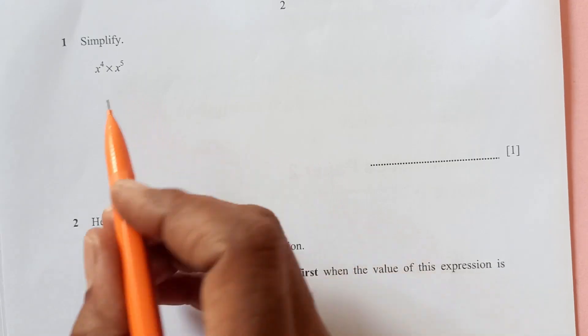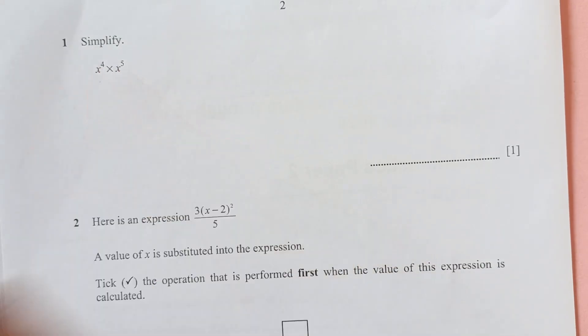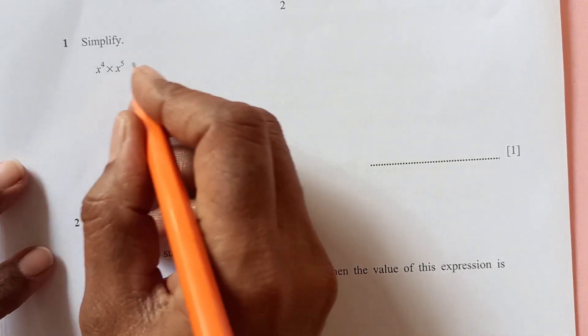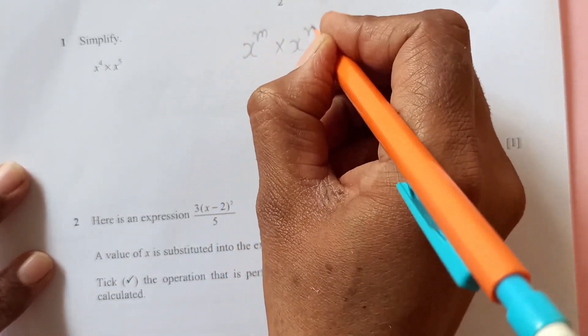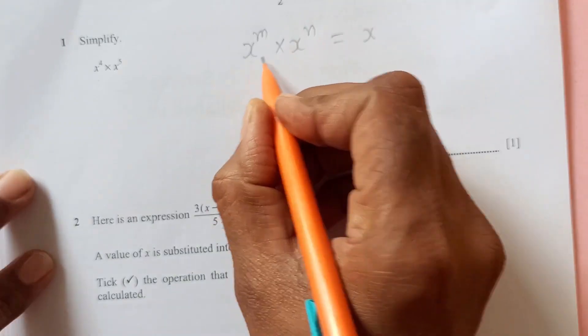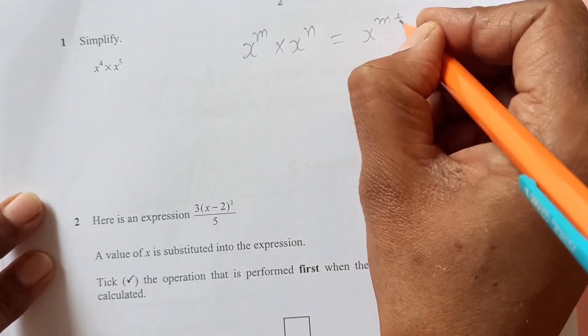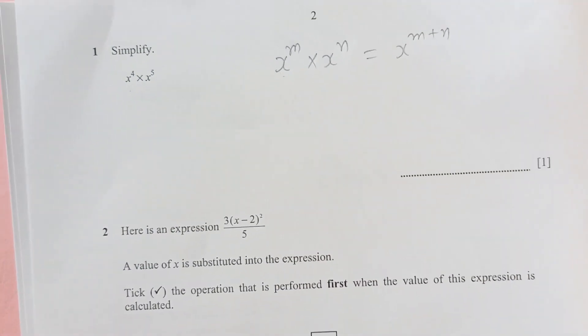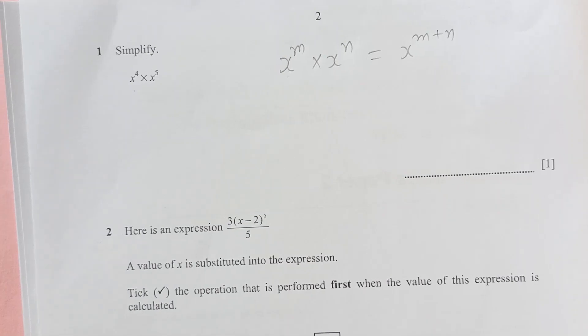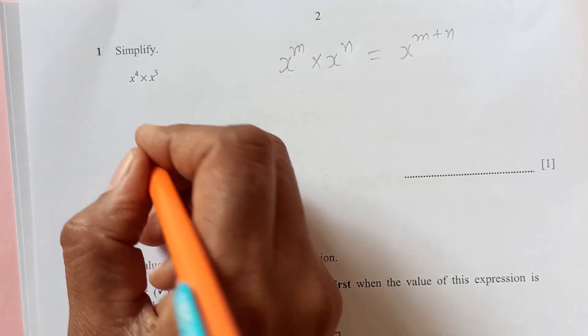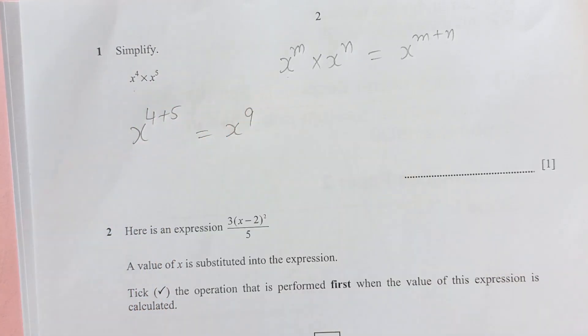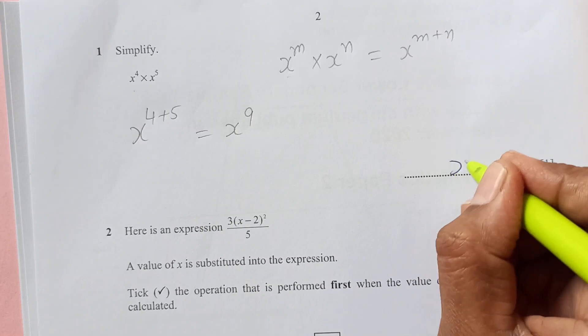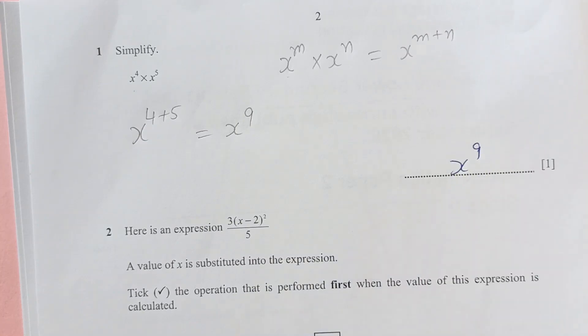The first question that we have here, x power 4 plus x power 5. We have exponent rule x power m times x power n. Whenever you have the same base, you just add the powers. That is going to be x power m plus n. So final answer is going to be 4 plus 5, that is x power 9.